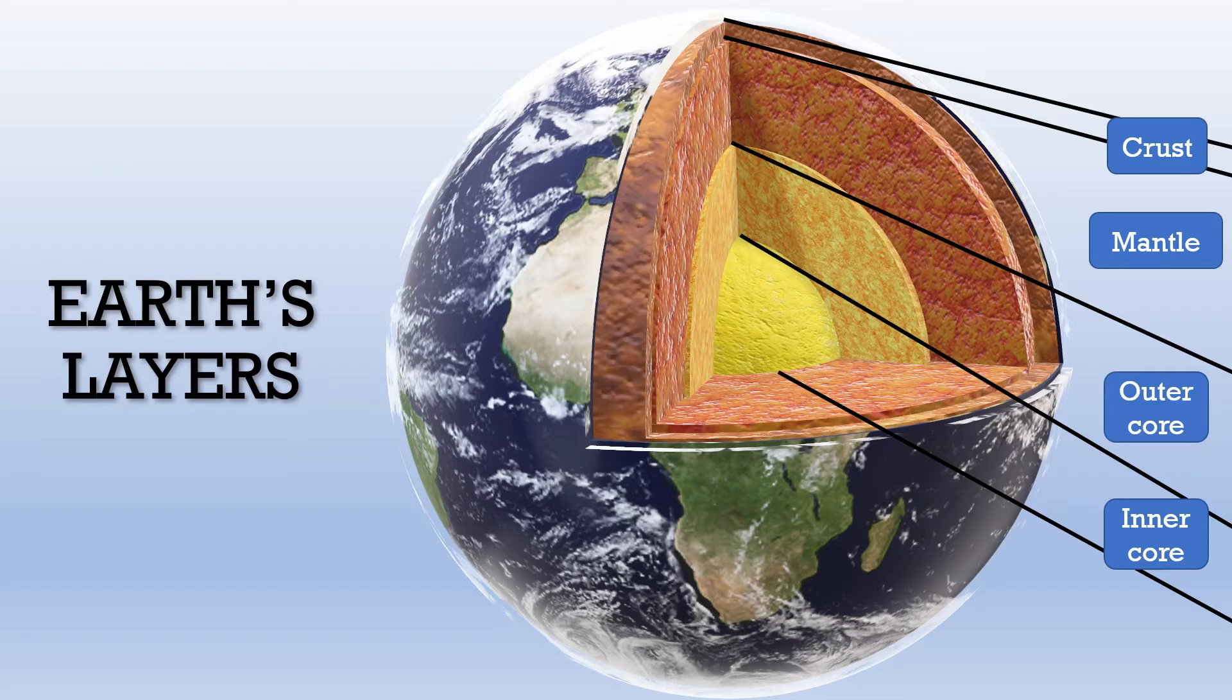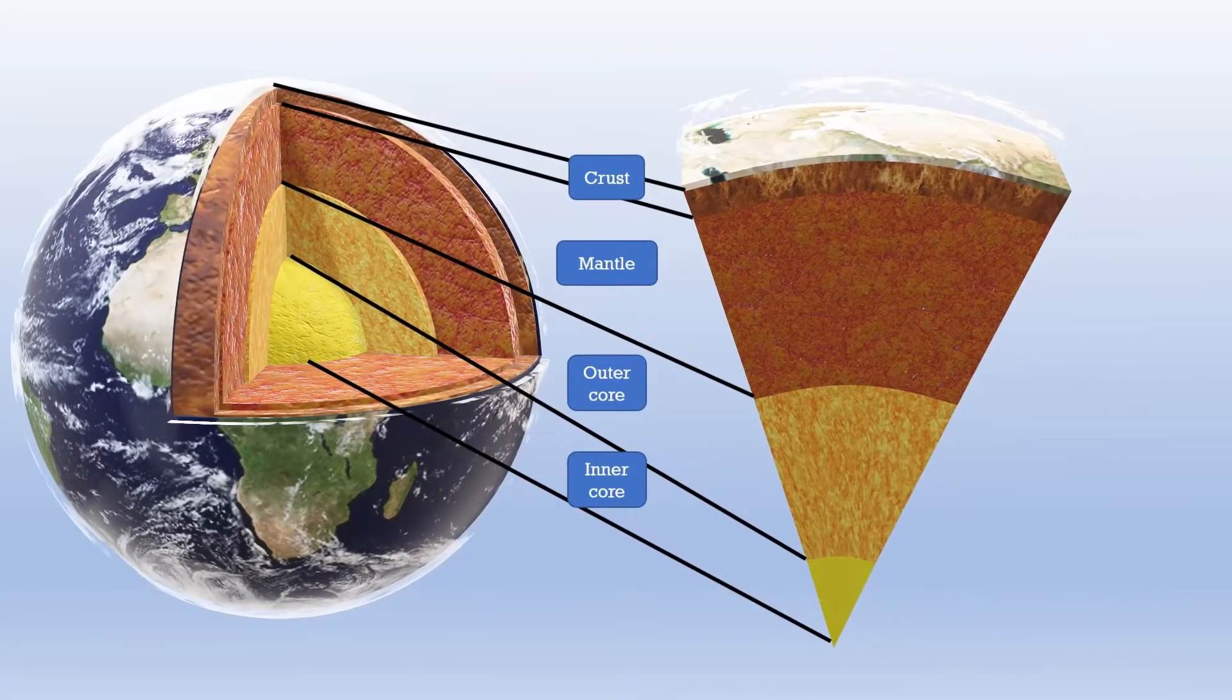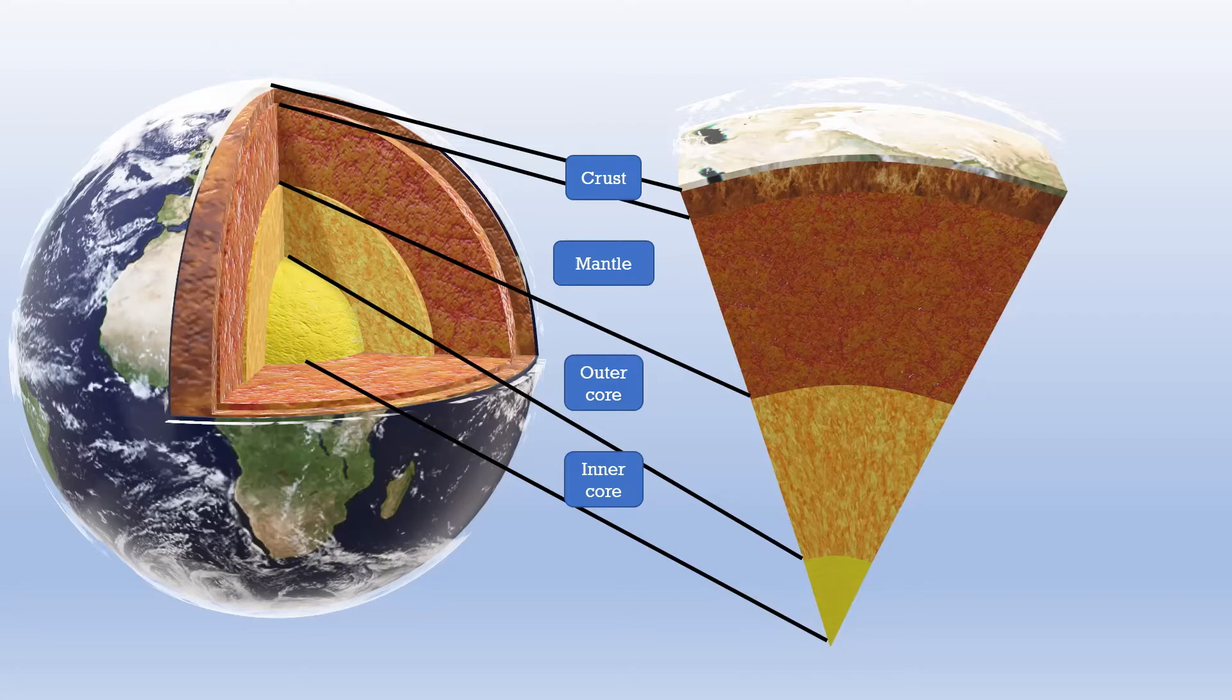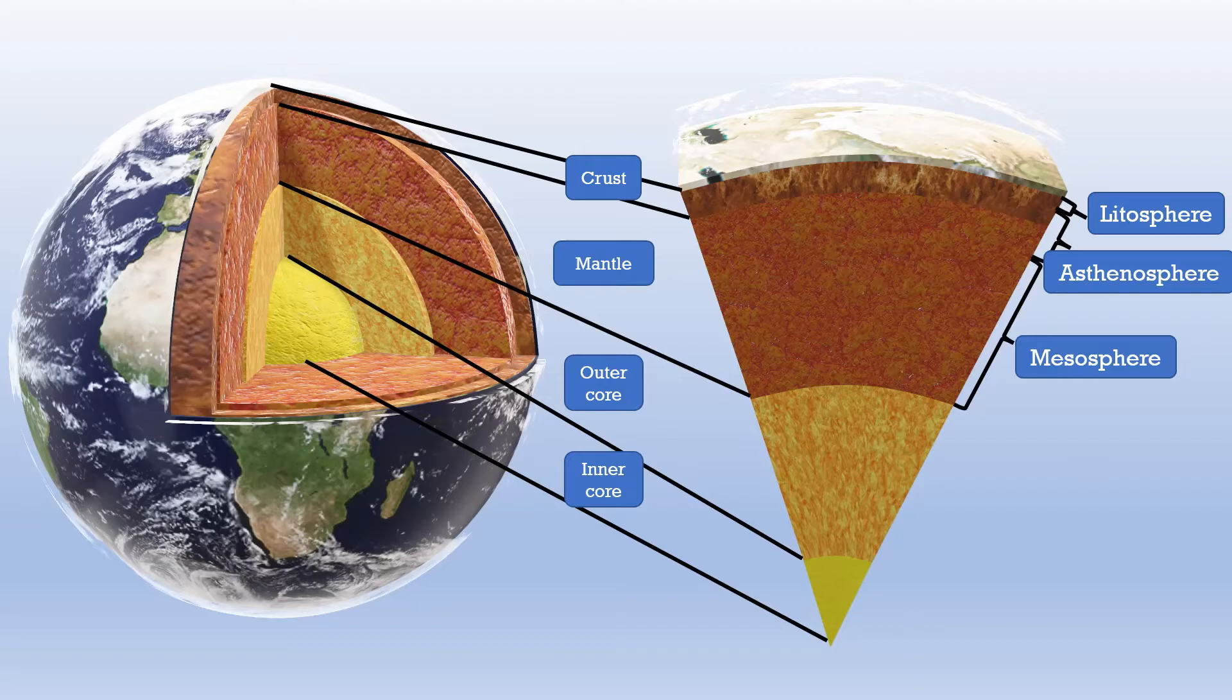Let us look at the mantle now. The mantle is actually further separated into three different layers: the lithosphere, asthenosphere, and finally mesosphere. To know all of the layers of our earth, let us look at the diagram next.